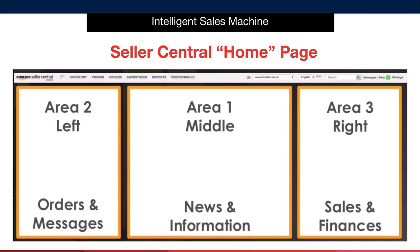The interface is very simple and can be broken down into four main areas. Along the top you'll see the main menu bar, starting in the top left-hand corner with the inventory option. We should think of the core area of the page as three different parts. Area 1 in the middle of the screen is all about news and information that Amazon wants to make you aware of. Area 2 to the left of the screen is all about your account in relation to orders and messages from customers or potential customers. Area 3 to the right of the screen is all about sales value and financial information.